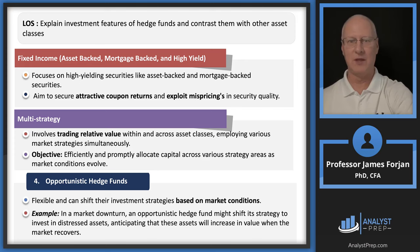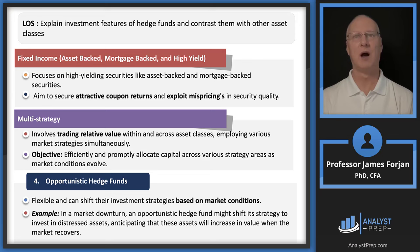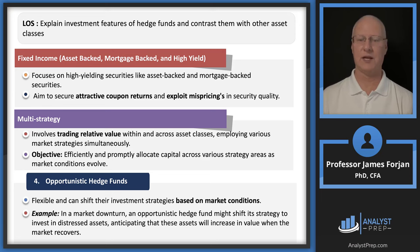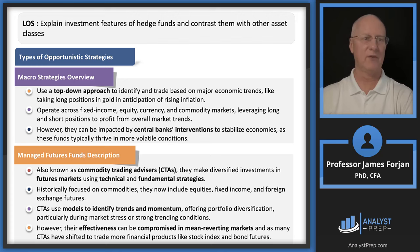Opportunistic hedge funds use a top-down, macro approach — evaluating the economy and saying which firms will benefit from expected economic changes and which won't, then taking long and short positions accordingly. Think back to our economics modules — GDP, employment, imports, exports. You need to know about major economic trends. You can use leverage, margins, and any kind of market.